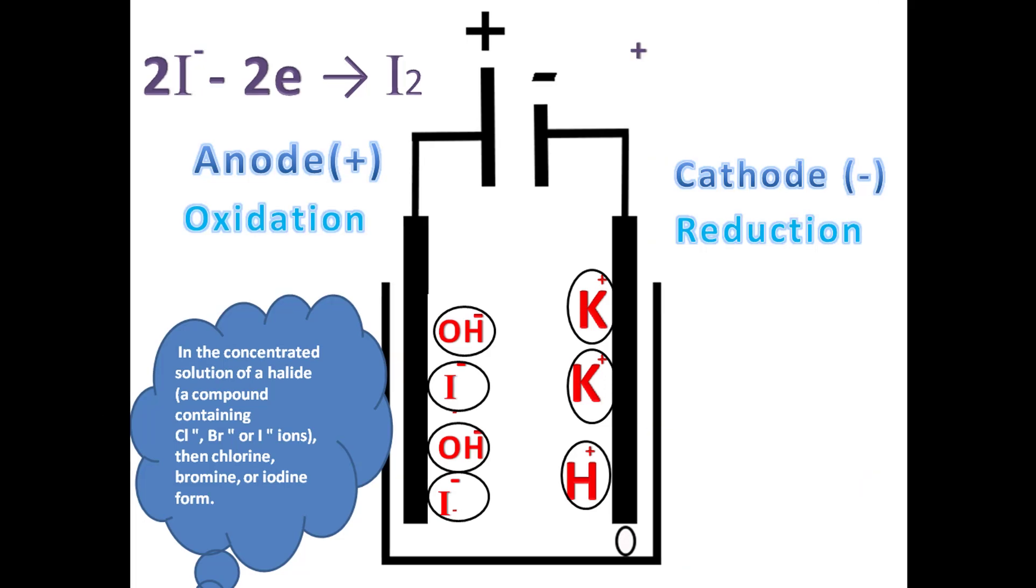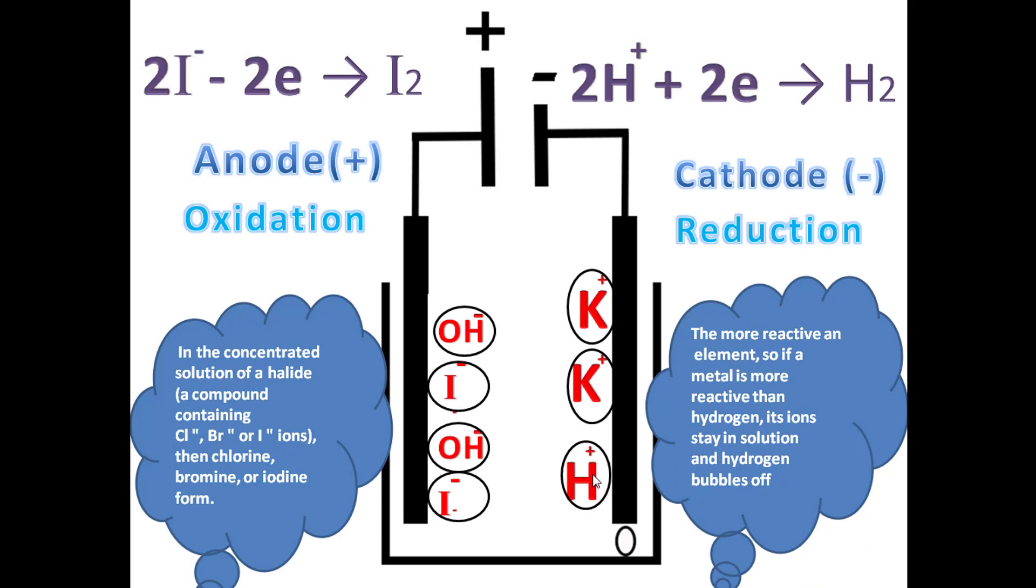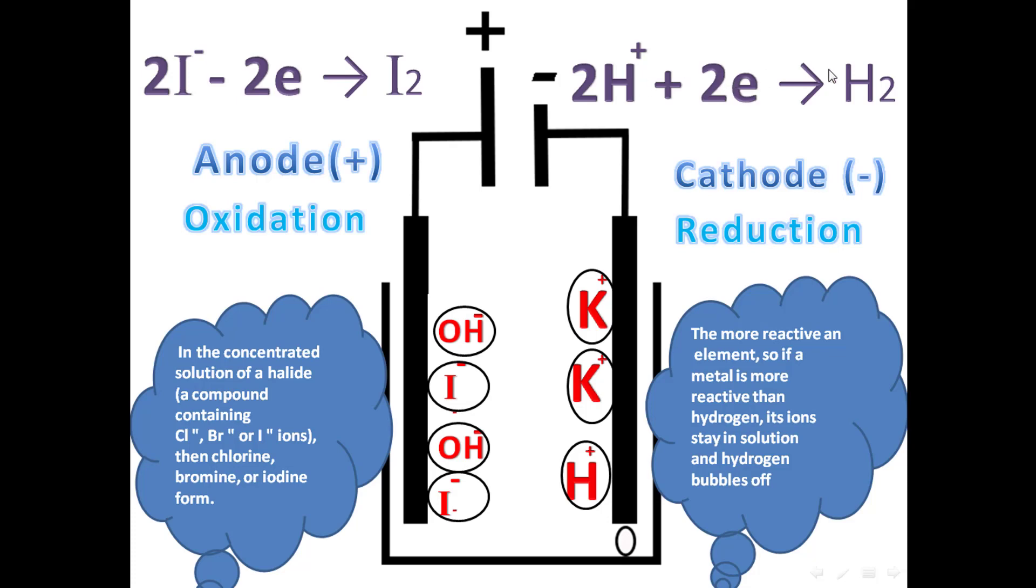According to the rule, the least reactive element will be reduced. According to the reactivity series of elements, hydrogen is less reactive than potassium, so hydrogen will be reduced. The reduction equation for hydrogen: hydrogen gains electrons and becomes H2. You will notice the bubbles of hydrogen gas at the cathode, and the product will be I2 at the anode. This is the product on the anode and this is the product at the cathode.